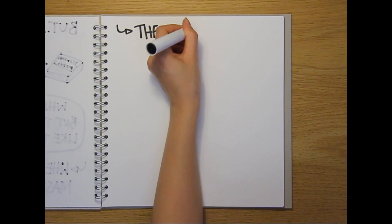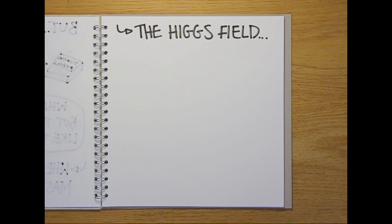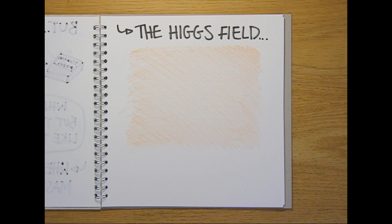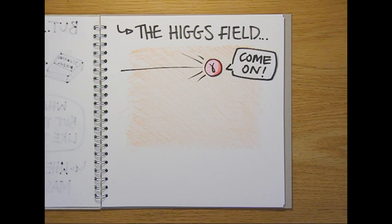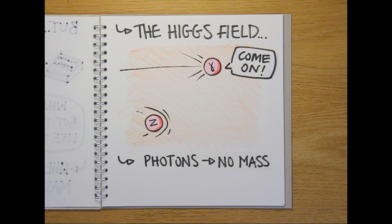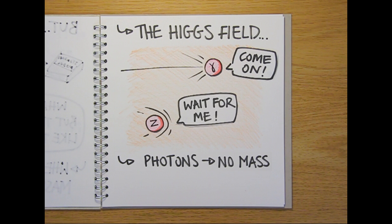This is where something known as the Higgs field comes in. This invisible field fills all of space, and when particles interact with the field, it makes them appear to have mass. Those that don't interact with the field at all, but just shoot straight through it, appear to have no mass at all, like photons. And particles that interact a lot with the field will be slowed down and appear to have more mass, like the heavy Z boson.